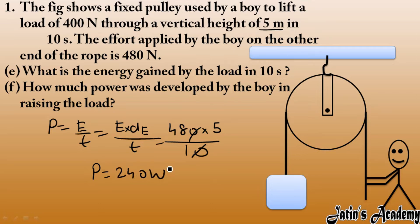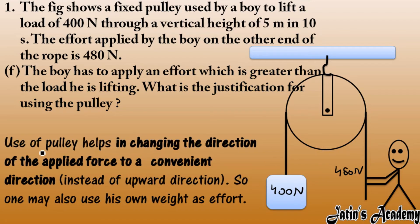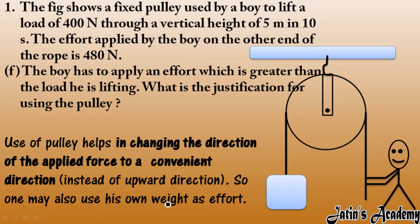The boy applies 480 Newton effort while load is only 400 Newton — so why use the pulley? The pulley helps in changing the direction of the applied force to a convenient direction. Applying force downward is convenient while upward is inconvenient. Also, by hanging on the rope the boy can use their own body weight to lift the load, which moves upward automatically.